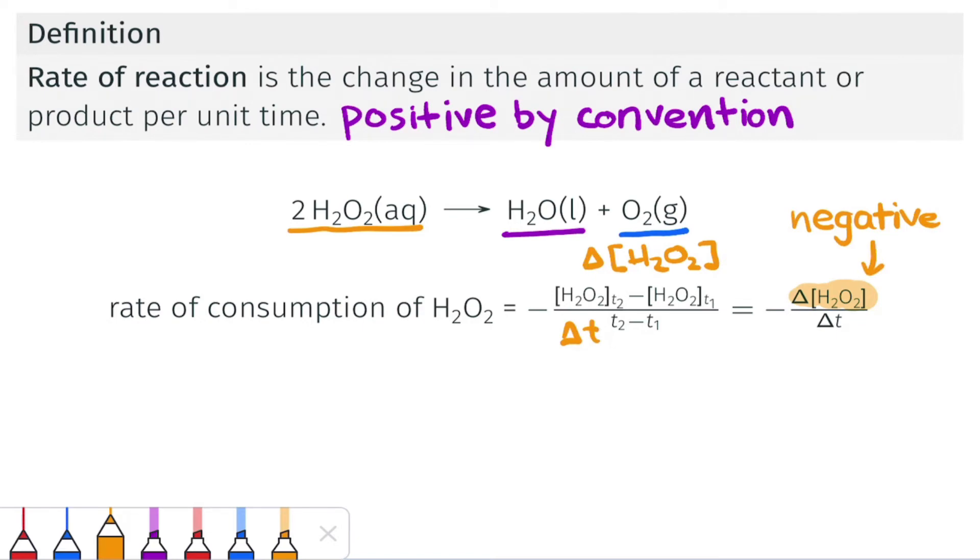We can also express the reaction rate in terms of the production of H2O or the production of O2. So analogous reaction rate expressions could be written, for example, for the production of H2O by writing the change in the concentration of H2O divided by the change in time.